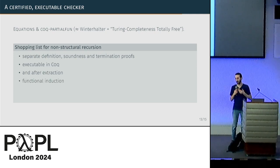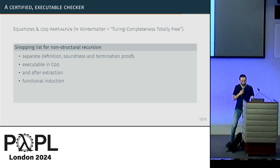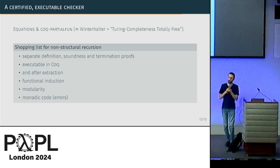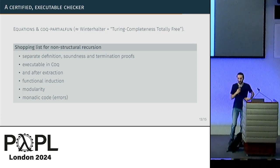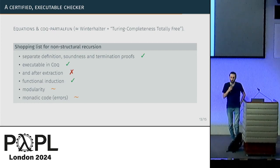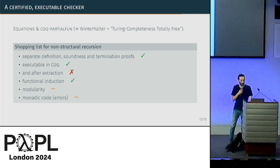You also want to be able to extract the thing and get something that runs. To do soundness and termination proofs, you want functional induction — an induction principle following the structure of your recursive function, otherwise you don't get anywhere near a result. We also have more PL-oriented concerns: modularity, since you want a typing algorithm that can call different conversion routines that call reduction machines; and support for monadic code, since type checkers and conversion checkers are very naturally written in the error monad. We have most of these things; extraction hasn't gotten much love yet, but it shouldn't be a very deep problem.